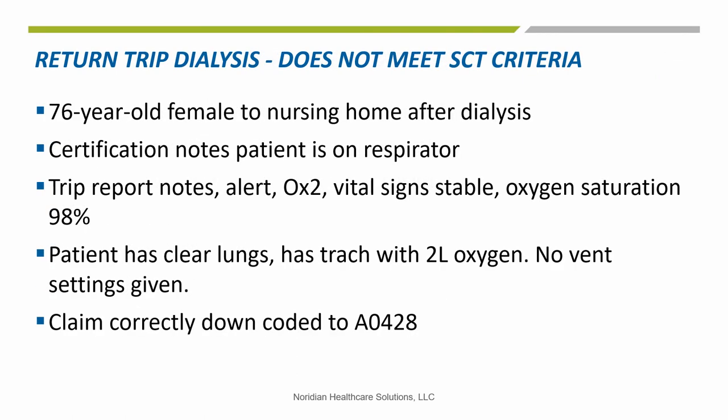Here is a return trip SCT example. The note stated the patient was on a respirator, having dialysis, and returning to the nursing home — a 76-year-old female returning to a nursing home after dialysis. The certification statement notes the patient is on a respirator. The trip report notes alert times 2, vital signs stable, oxygen saturation 98, patient has clear lungs, has trach with 2 liters oxygen, no vent settings given. The claim was correctly down-coded to A0428 instead of specialty care transport. Medical review agreed with the necessity of a return trip via ambulance, but not at the level of specialty care transport, so the claim was down-coded from A0434 to A0428.